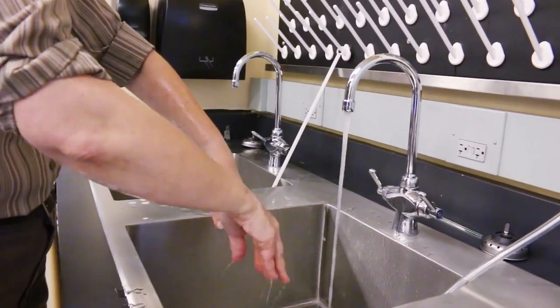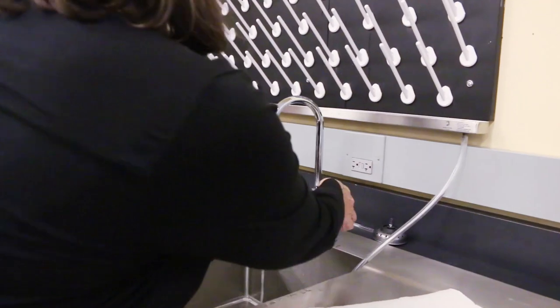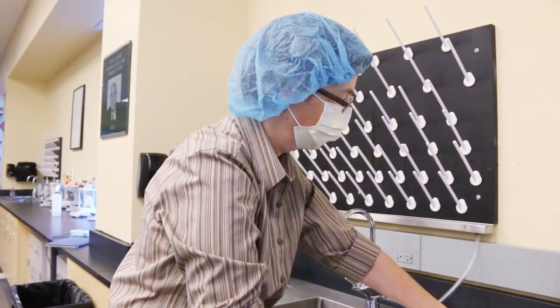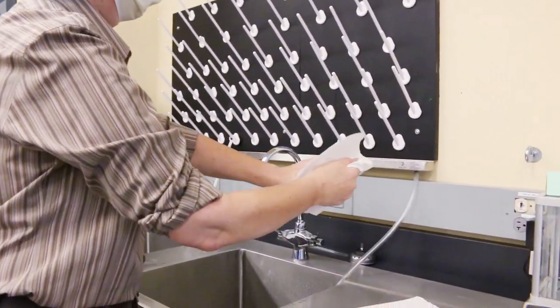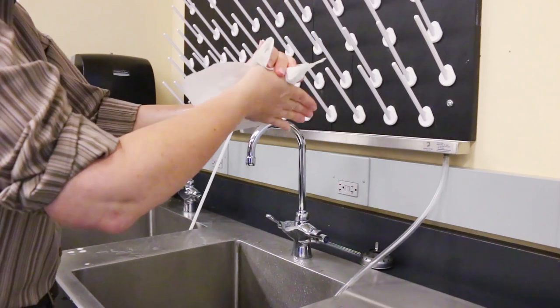When rinsing is complete, ask the judge to turn off the water. Turn off the water, please. Step 18, using an aseptic lint-free paper towel, dry both hands moving from fingers toward your elbow. Dispose of the paper towels in a waste container.